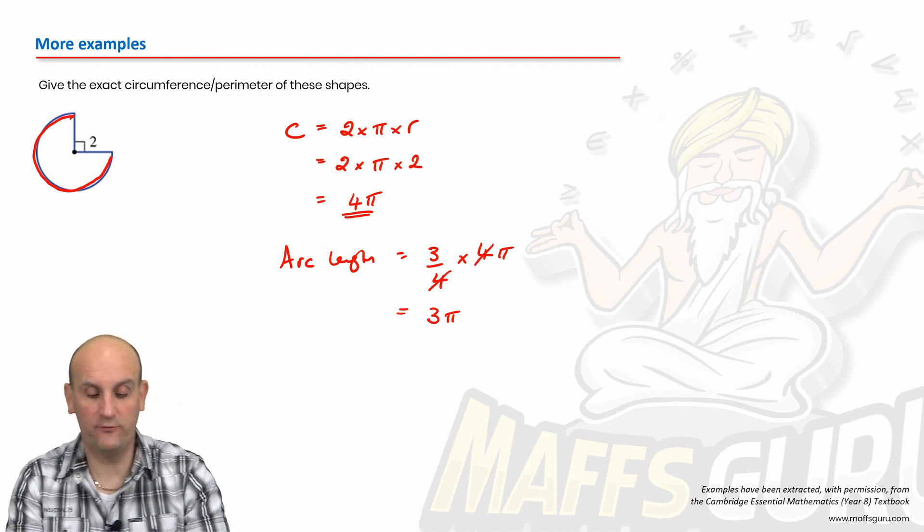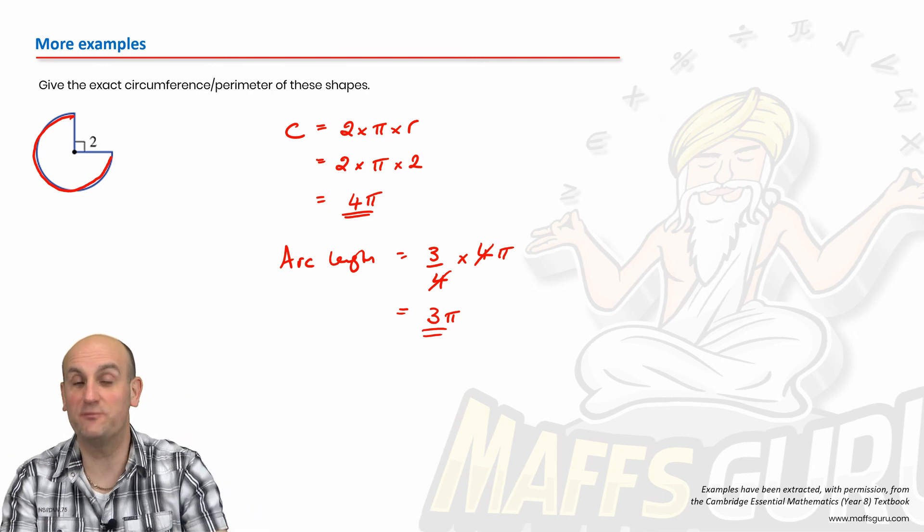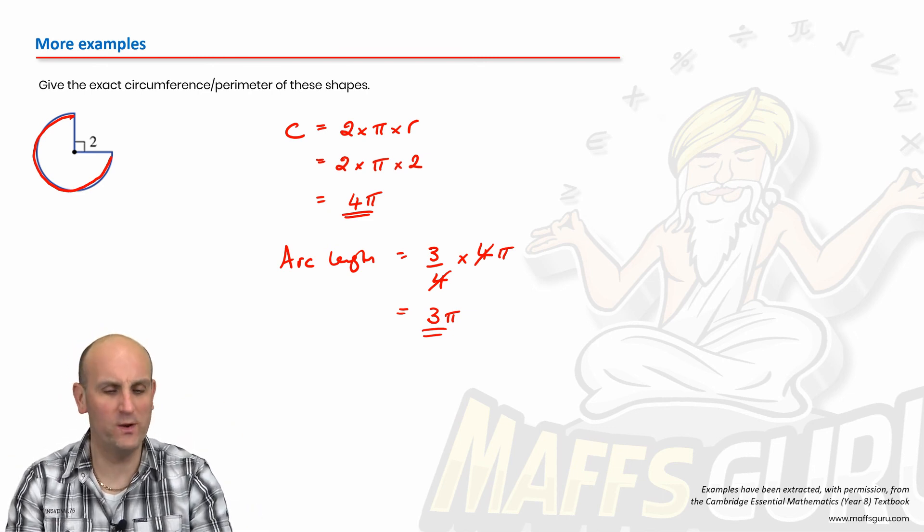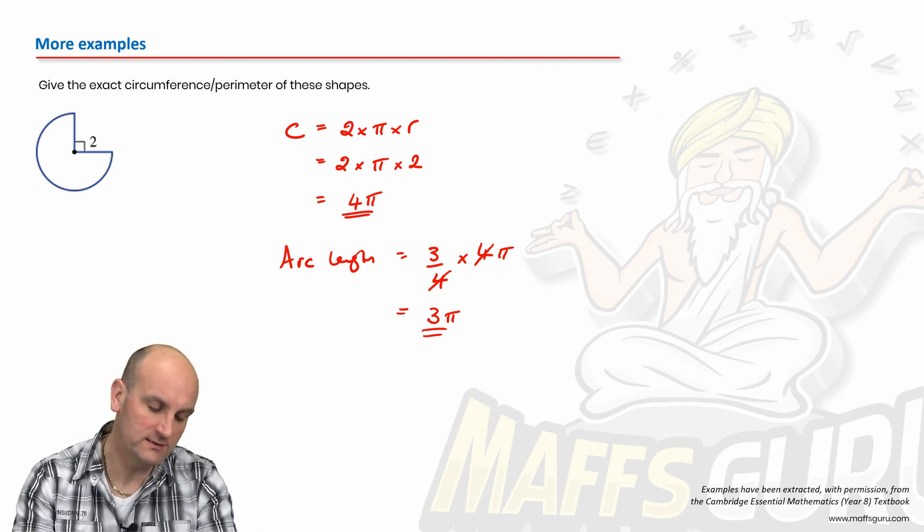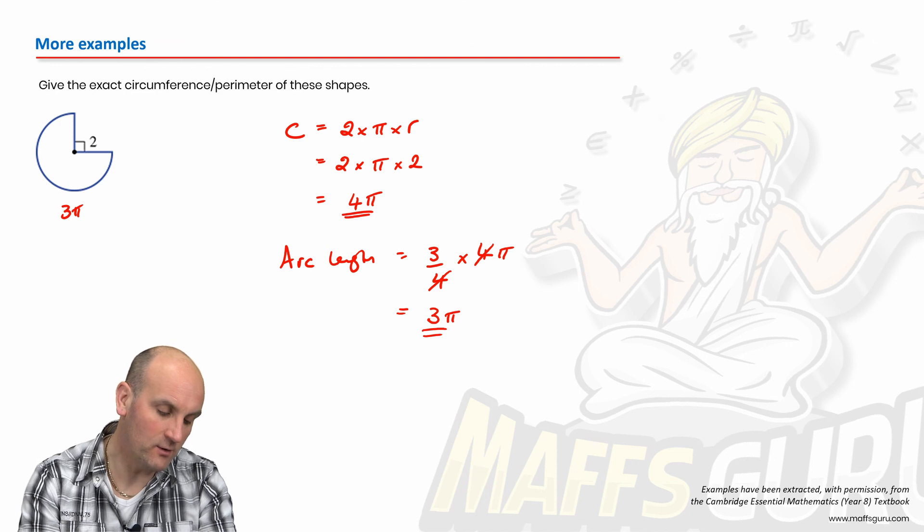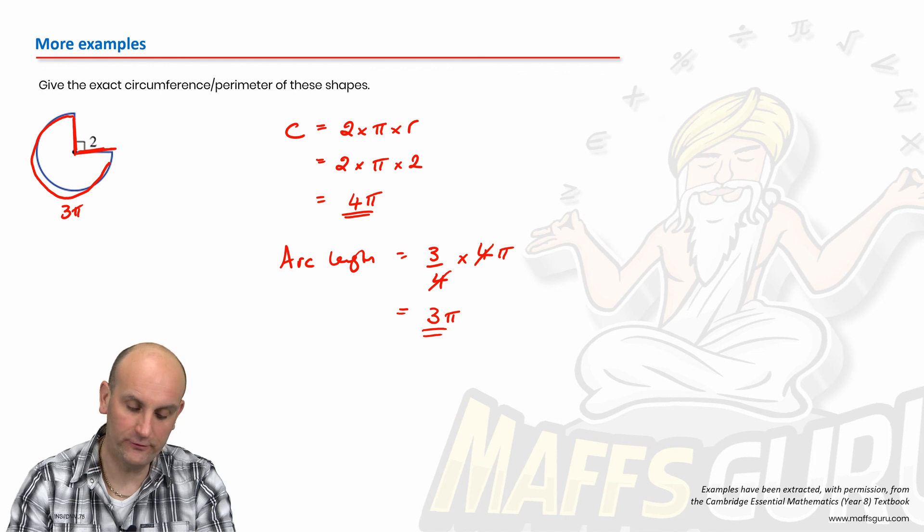Now, that's because that 4 and that 4 cancel just to give me 3 pi. So I now know that that's my perimeter of my whole shape. Yes? No. No, it's not. Why? Because we've now got to add on those 2 extra sections we'd only found. So 3 pi is only this section here. I now need to add on 2 and add on 2.